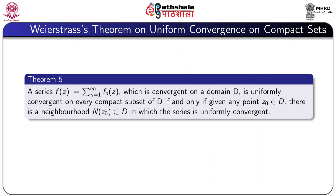We now state the Weierstrass theorem on uniform convergence on compact sets. A series f(z) = Σ(n=1 to ∞) fₙ(z) which is convergent on a domain D is uniformly convergent on every compact subset of D if and only if given any point z₀ in D there is a neighborhood N(z₀) lying in D in which the series is uniformly convergent.